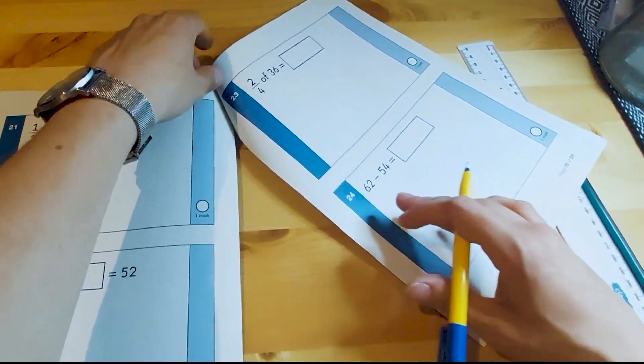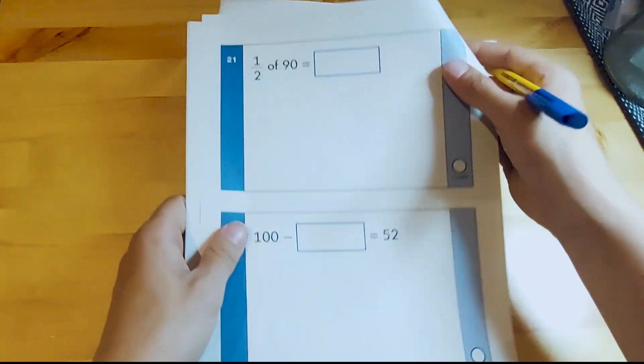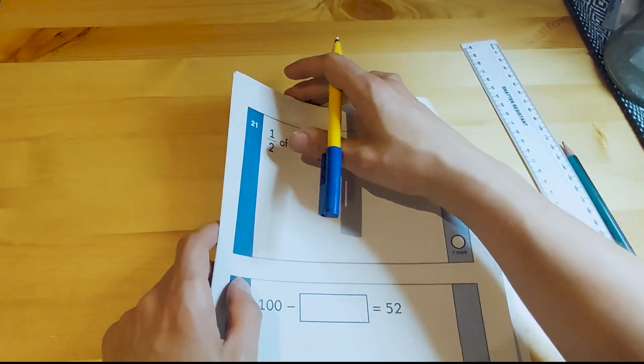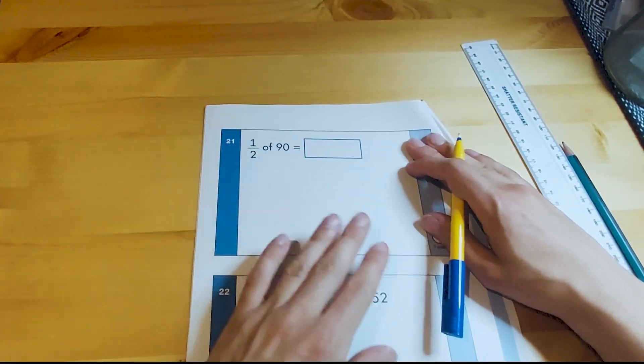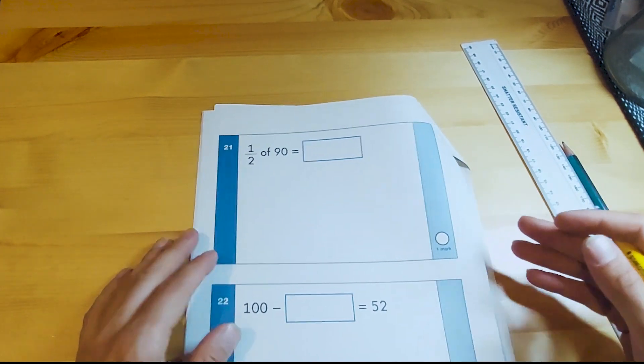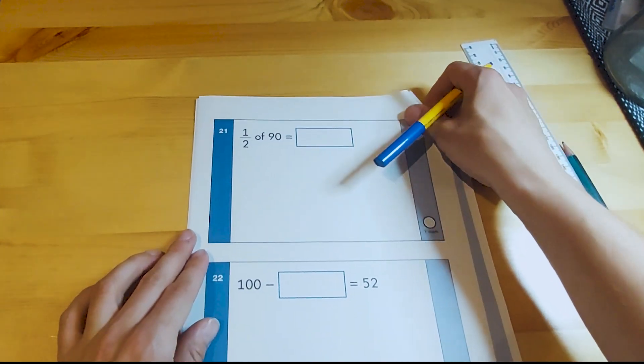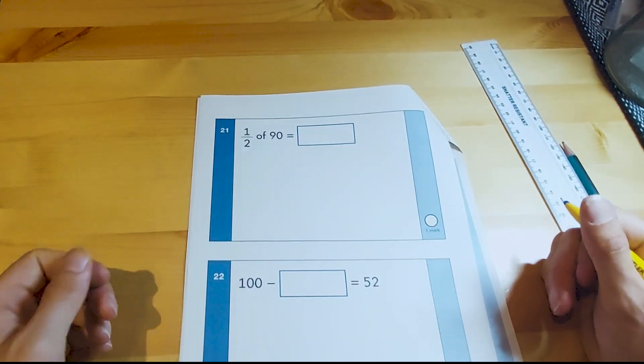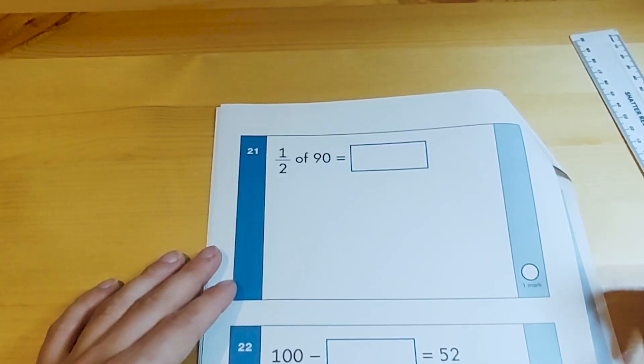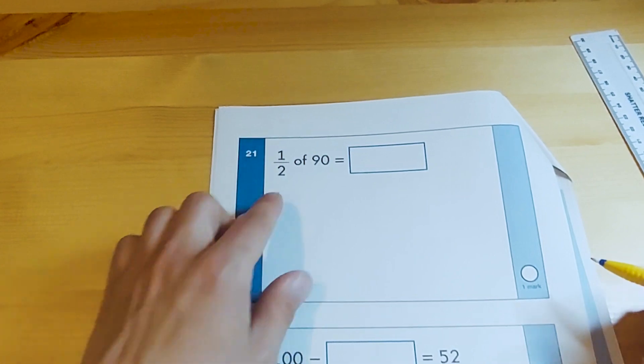We get another question. Now this one was a tricky question, I thought quite harsh really. It's another one that came up on my channel because I did a walkthrough of this paper and I didn't go through this question, so I'm going to go through it now: a half of 90.